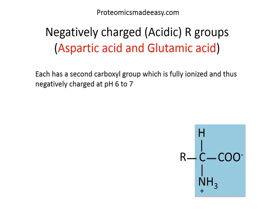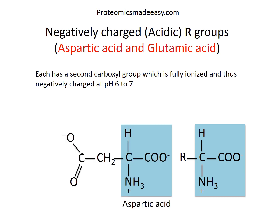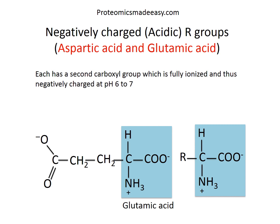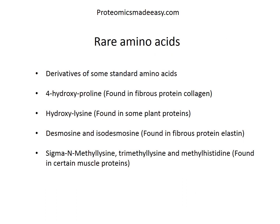The fourth group is amino acids with negatively charged R groups, also called acidic amino acids. There are two: aspartic acid and glutamic acid. Both have a second carboxyl group which is fully ionized, giving a negative charge at pH 6 to 7. The structure of aspartic acid is CH2-COO⁻, and glutamic acid is CH2-CH2-COO⁻.